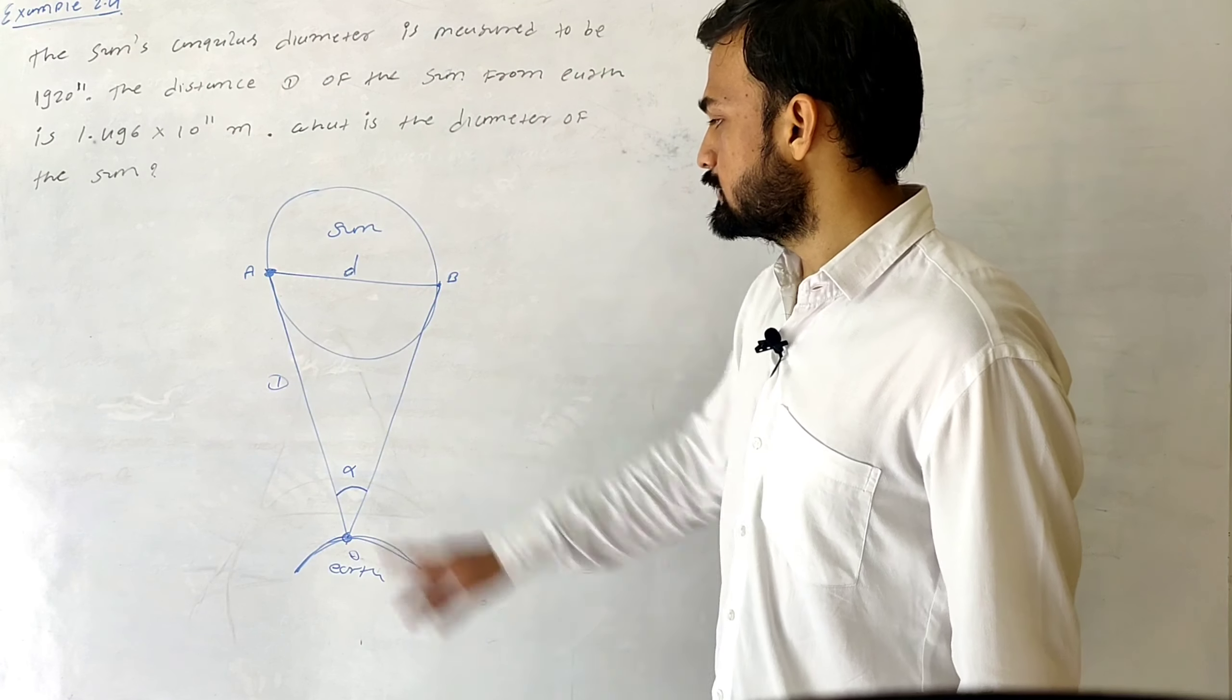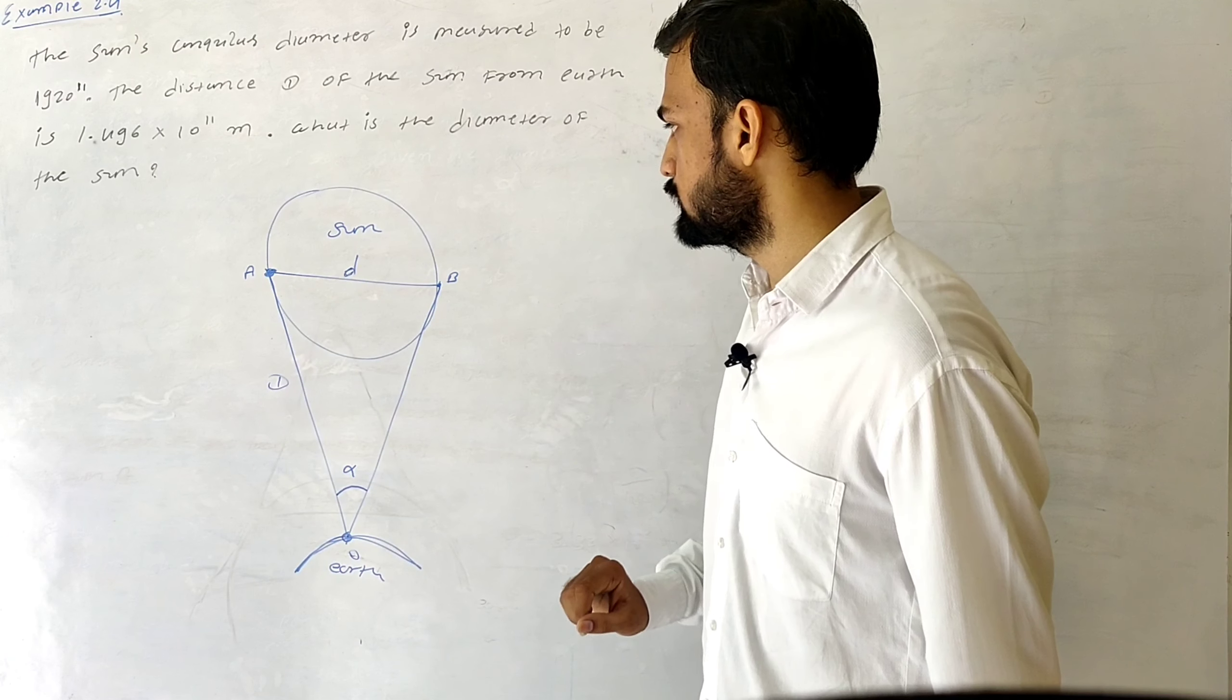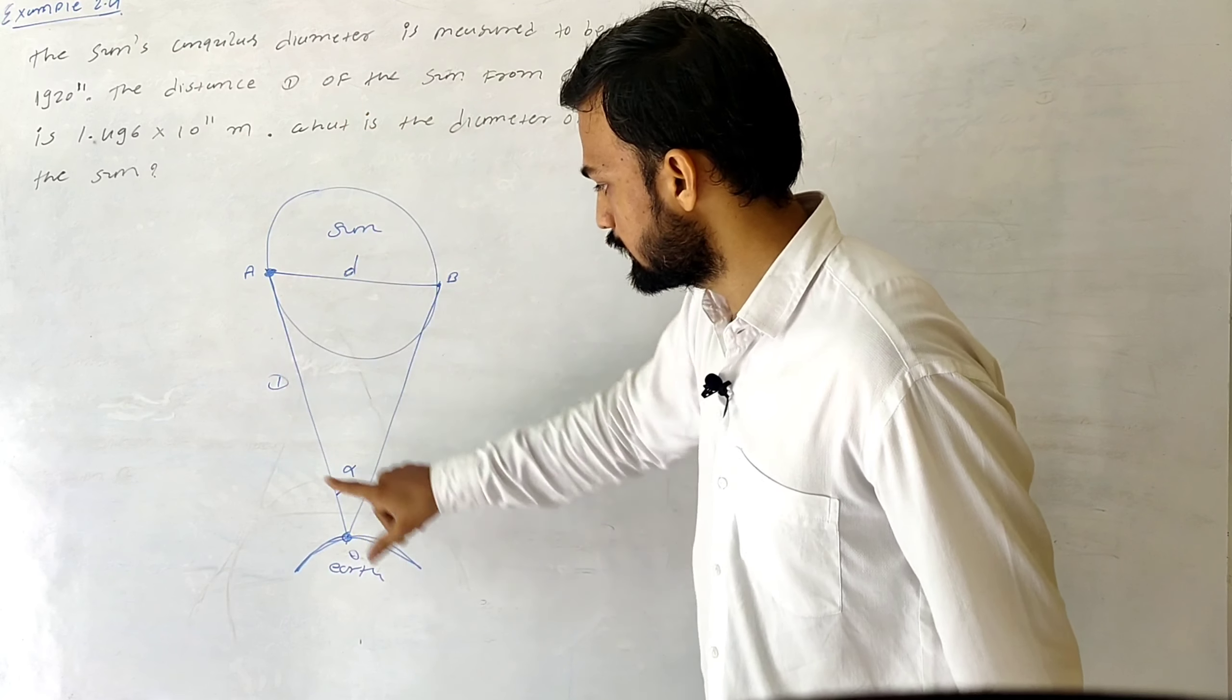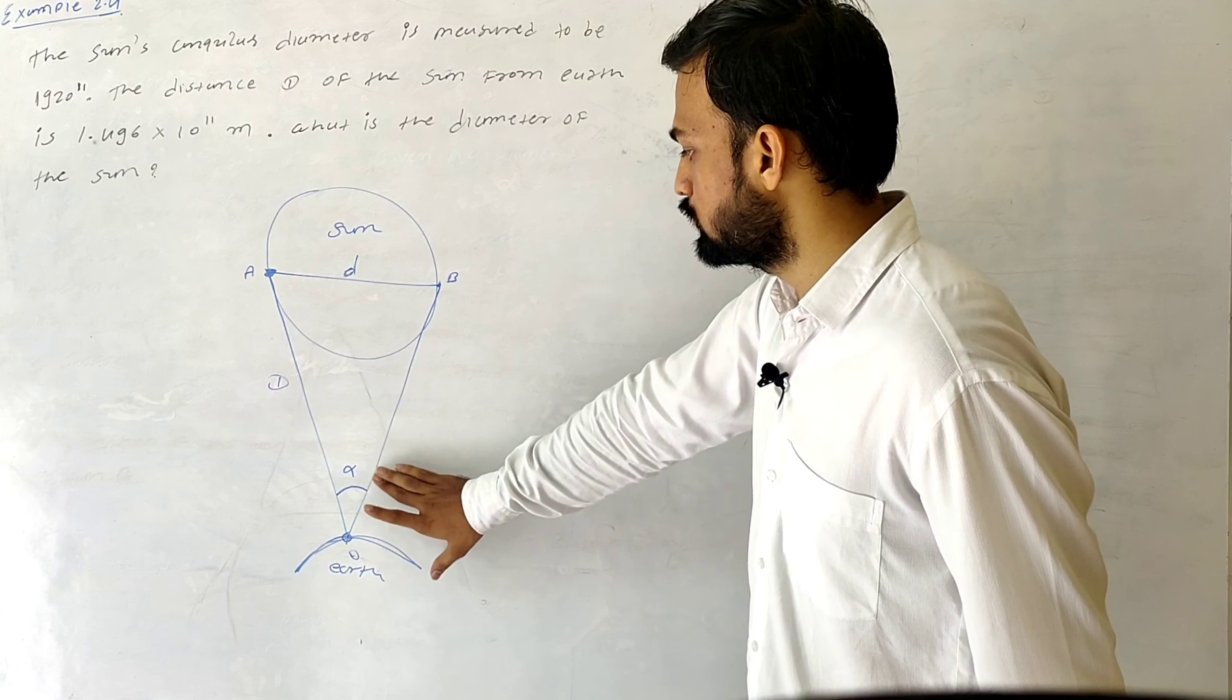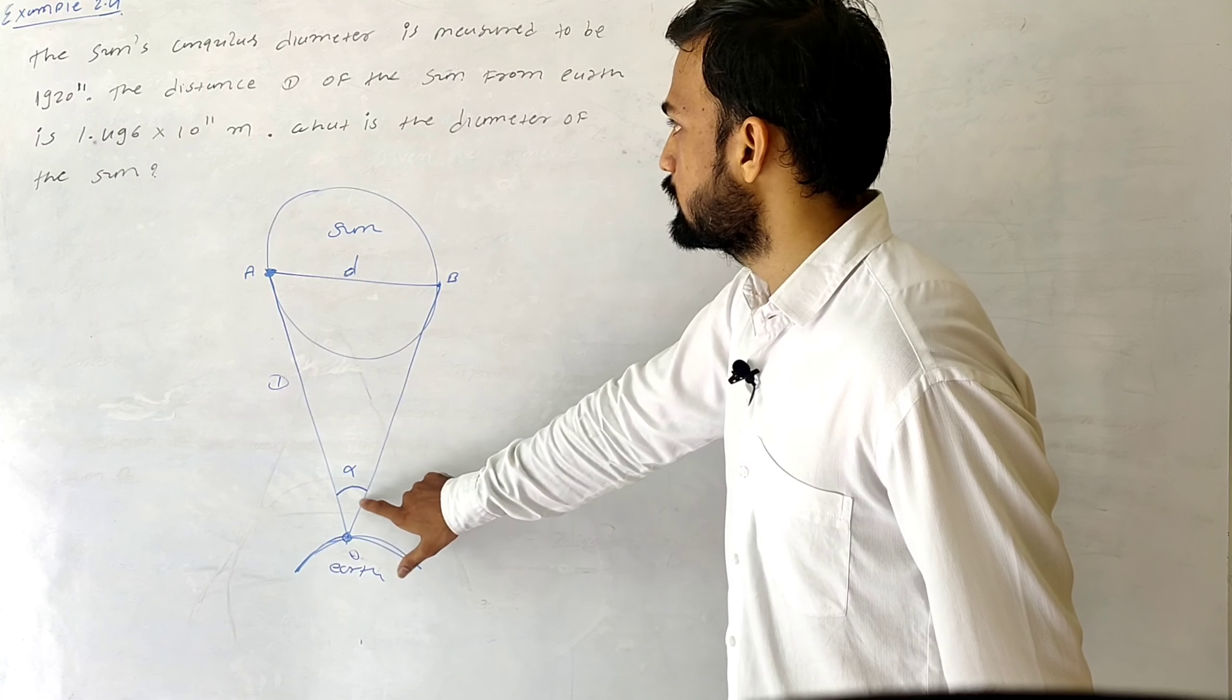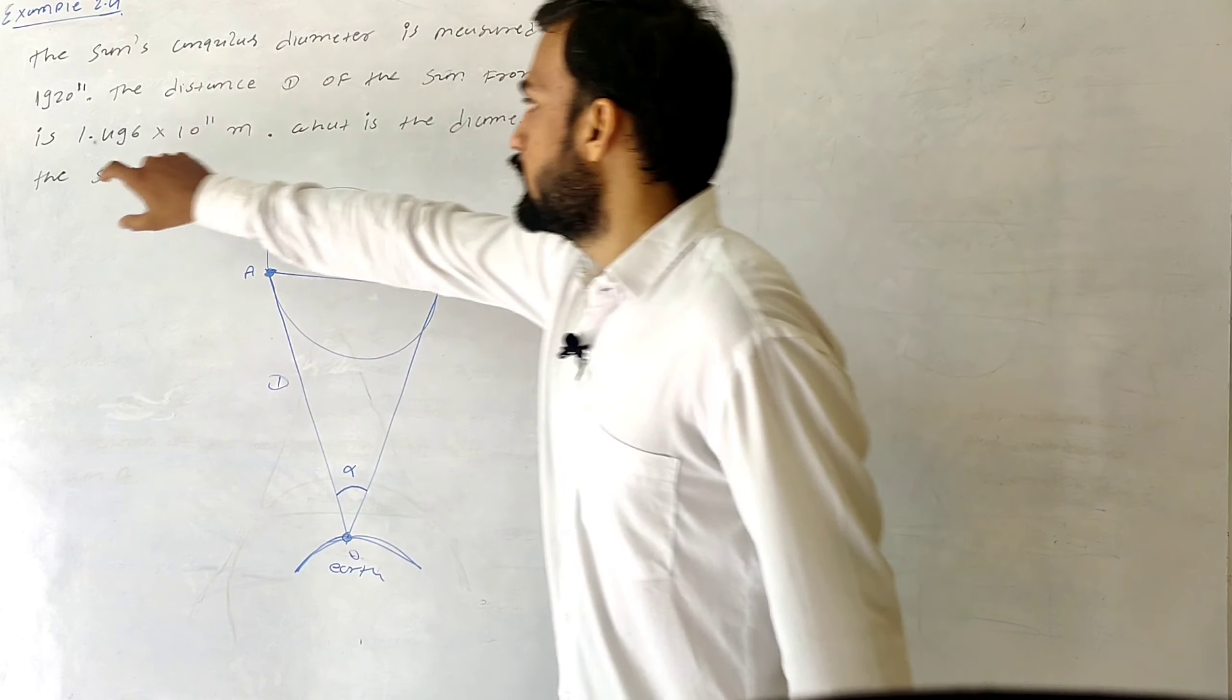Here you can see that these two diametrically opposite points of the sun, A and B, subtend an angle alpha at the same point O on the Earth. So over here, this alpha is the angular diameter of the sun.